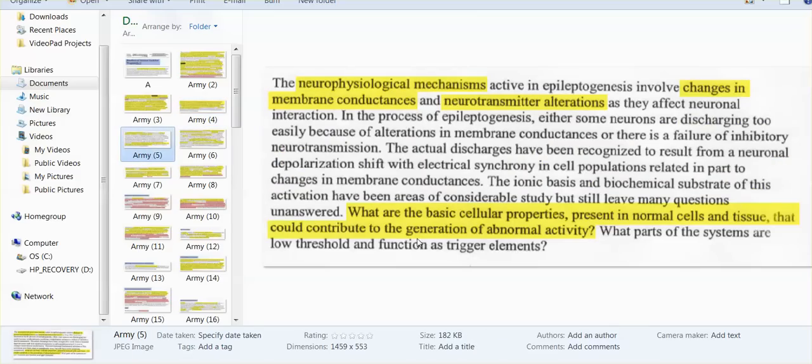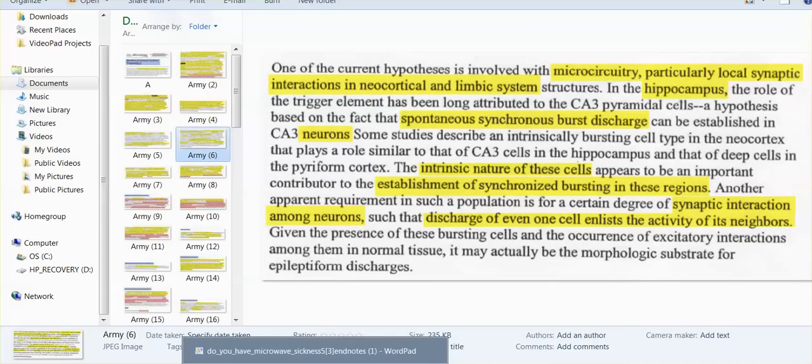So our military studied. What is that disruption about? They studied neurophysiological mechanisms, neurotransmitter alterations, changes in membrane conductance. They wanted to know what are the basic cellular properties present in normal cells and tissue that could contribute to the generation of abnormal activity. They studied it all.